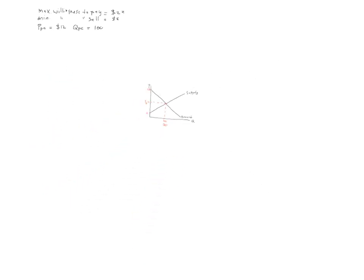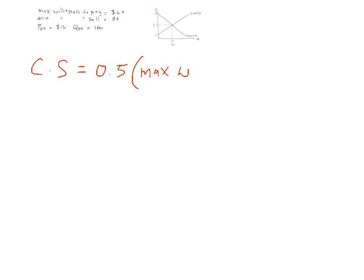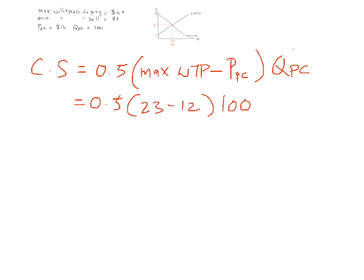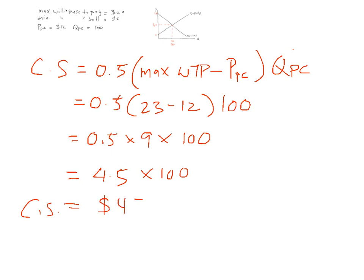Let's calculate consumer surplus. It's the area of a triangle, so 0.5 multiplied by (maximum willingness to pay minus the equilibrium price PPC), multiplied by the equilibrium quantity QPC. That is 0.5 × (23 − 12) × 100 = 0.5 × 11 × 100. You must show the workings — if you don't show the workings, you won't get any marks. Consumer surplus equals $550.